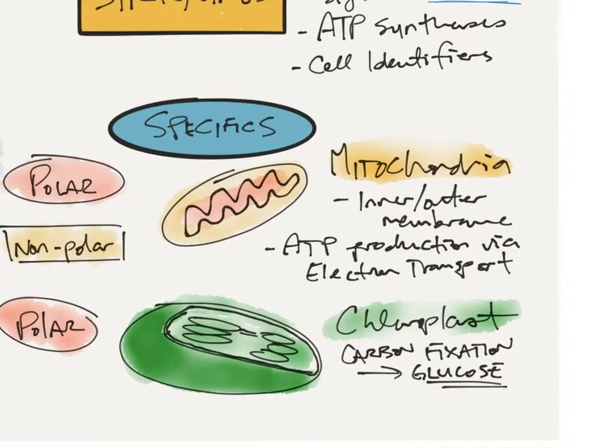Now when we're talking specifics, remember the mitochondria is in every kind of eukaryotic cell. There are inner and outer membranes. The outer membrane keeps the mitochondria like as itself. And then the inner membrane is where the electron transport chain happens.